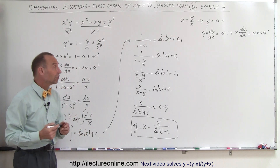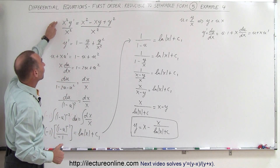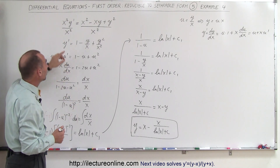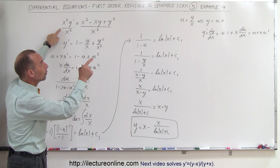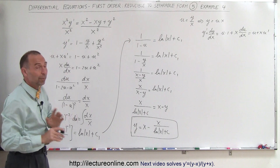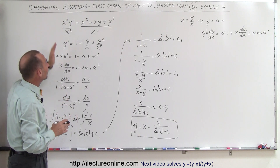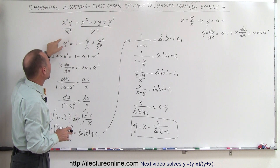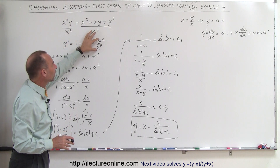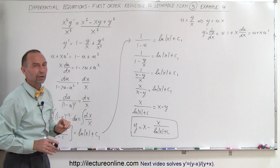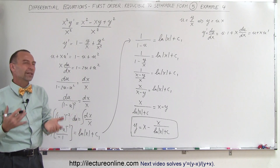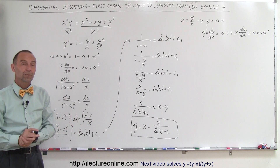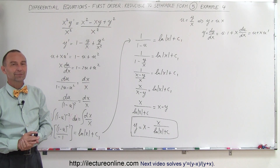To summarize: we have a situation where we cannot separate the variables directly, so we cannot find the solution until we make the substitution u equals y over x. But before doing that, we recognize we need to divide both sides by x-squared to get the y/x and y-squared/x-squared terms. It's usually a trial-and-error process, but once you see it, it becomes much easier to work the problem.